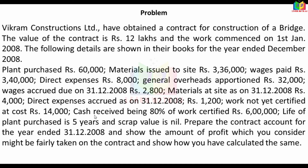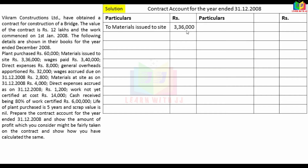Now we have prepared the contract account. We have to provide the plant purchase information and material information. We will discuss the problem. First, material issued at site on the debit side: material issued at site Rs. 3,36,000.